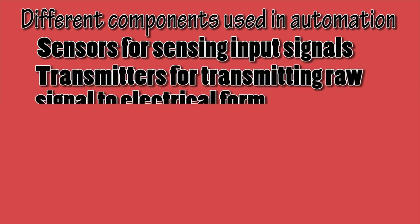Transmitters are used for transmitting raw signals into electrical form. Transmitters convert the raw signal to usable signals such as 4 to 20 mA, 0 to 10V DC, or 0 to 5V DC. There are three types of transmitters: two-wire, three-wire, or four-wire transmitters.